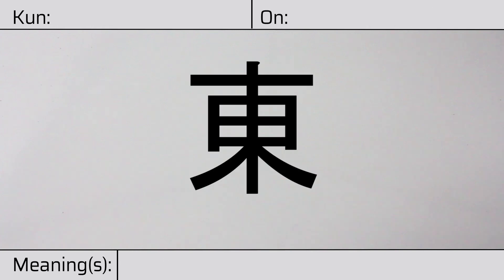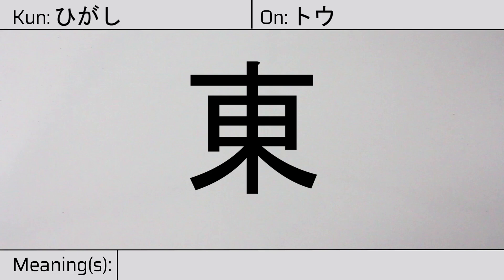Welcome to this lesson on Japanese kanji. Today, we'll be discussing this character. This kanji has a kunyomi, or Japanese reading of higashi. And it has an onyomi, or Chinese reading of tou. This character has the meaning 'east.'